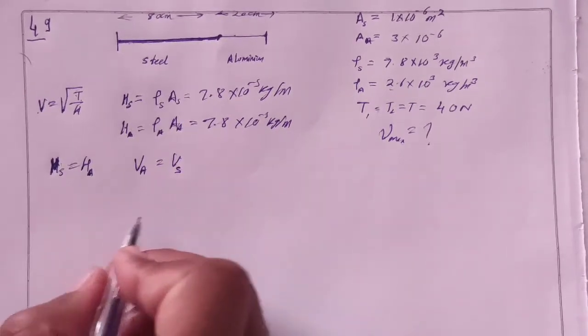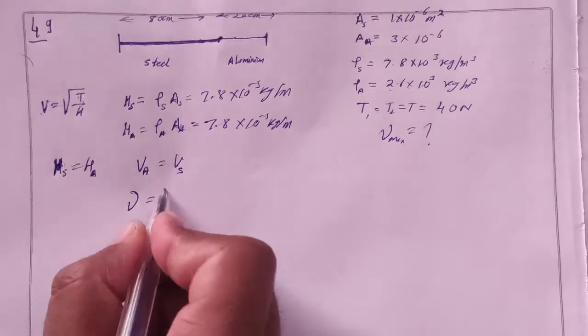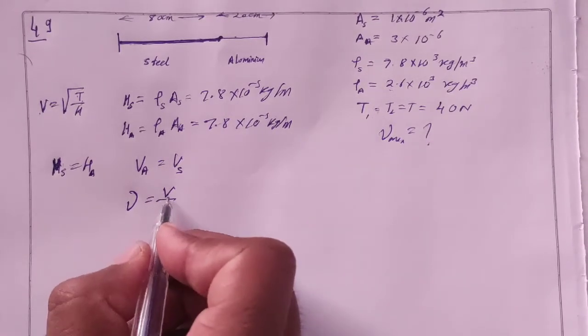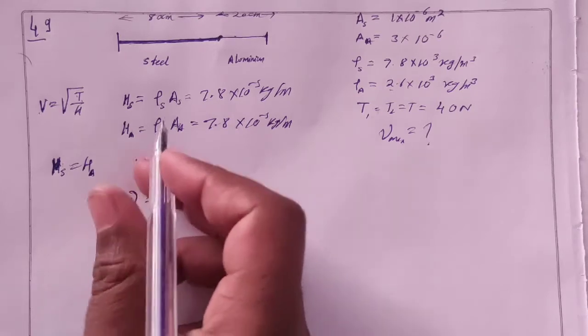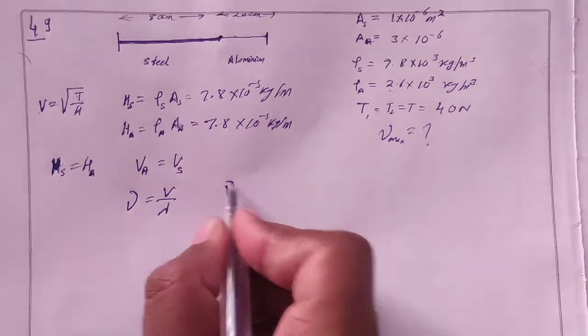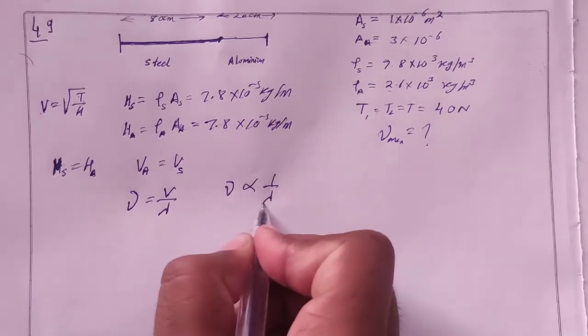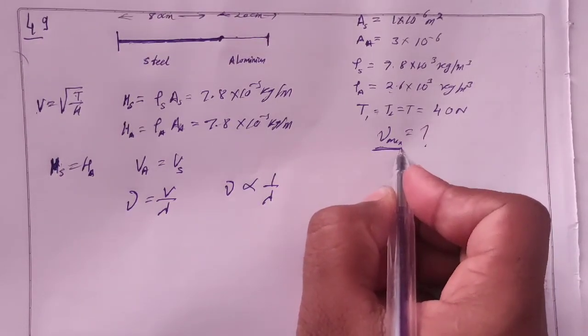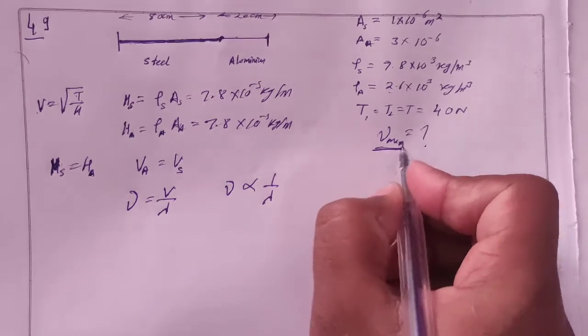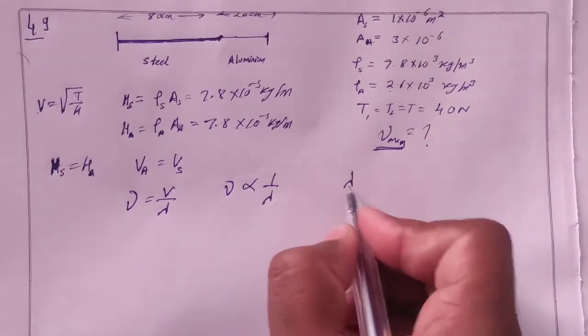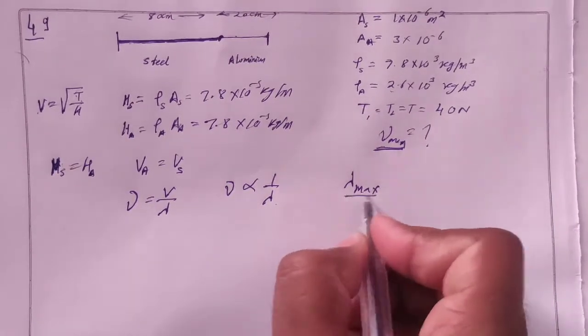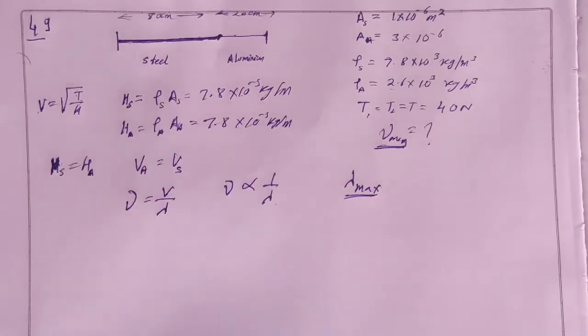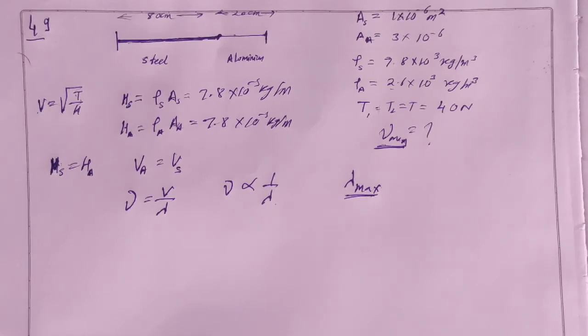Here we have frequency formula. Frequency is equal to velocity by lambda. Because the velocity is same, frequency is inversely proportional to lambda. We need to find frequency minimum. To find minimum frequency, we need maximum lambda. For maximum lambda, the loop should be maximum. The distance should be more.